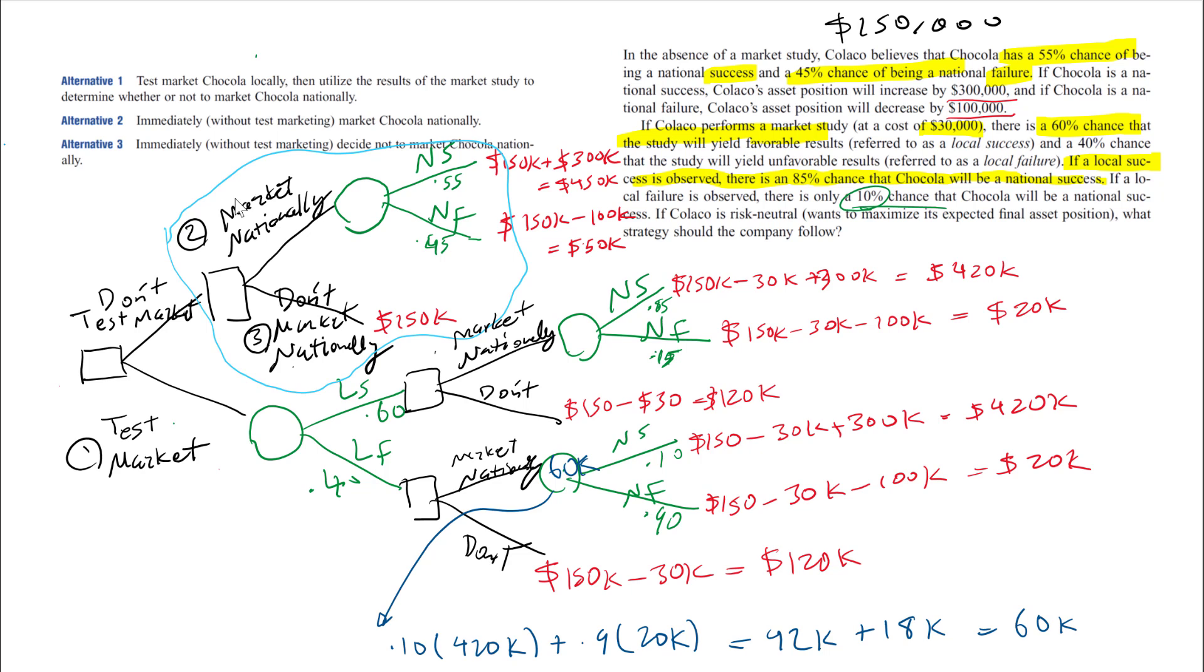So the value of this node is 60K. That's the expected value. Note that we do expected value only for events because those involve probabilities. Between 60K and 120K at this decision fork at the end of each branch, this one is larger, so I'm going to mark that as my decision.